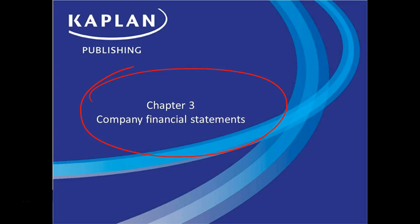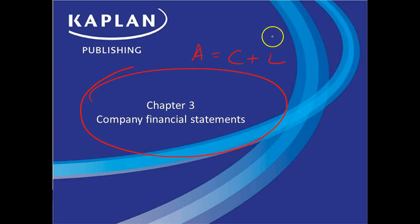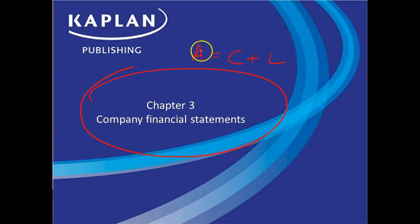Again, the truth is, as you know, all financial statements are based on the accounting equation — you know that already. A is equal to C plus L. And really, the income statement is really I minus E. So we're kind of going back to dead CLIC.